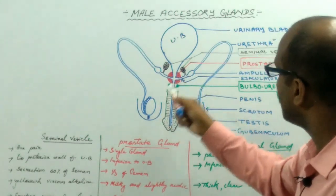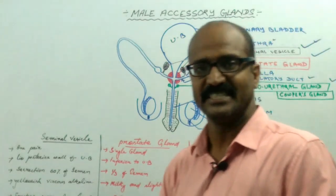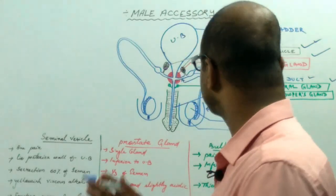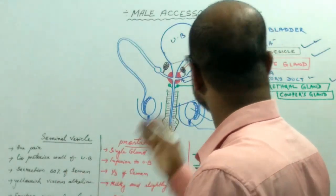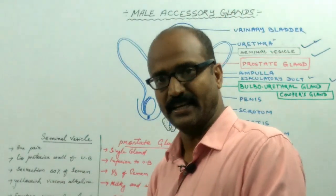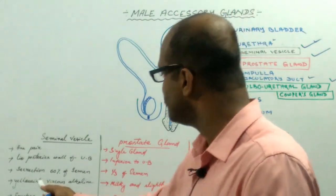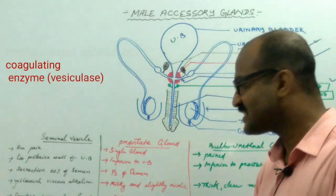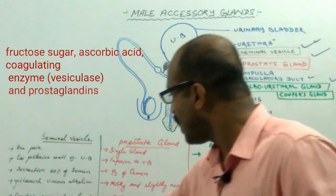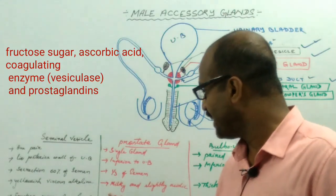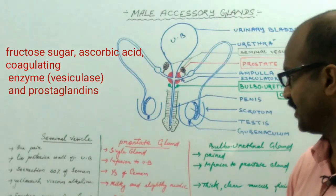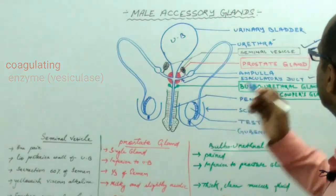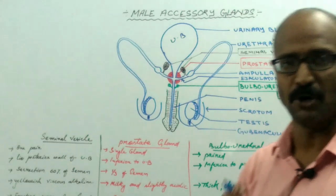The secretion of the seminal vesicle accounts for 60 percent of semen volume, meaning more than 50 percent of semen is secreted by the seminal vesicle. The secretion is a yellowish, viscous, alkaline fluid which contains fructose sugar, ascorbic acid, coagulating enzymes like vesiculase, and prostaglandins. The fructose is present only in the seminal vesicle in our body.